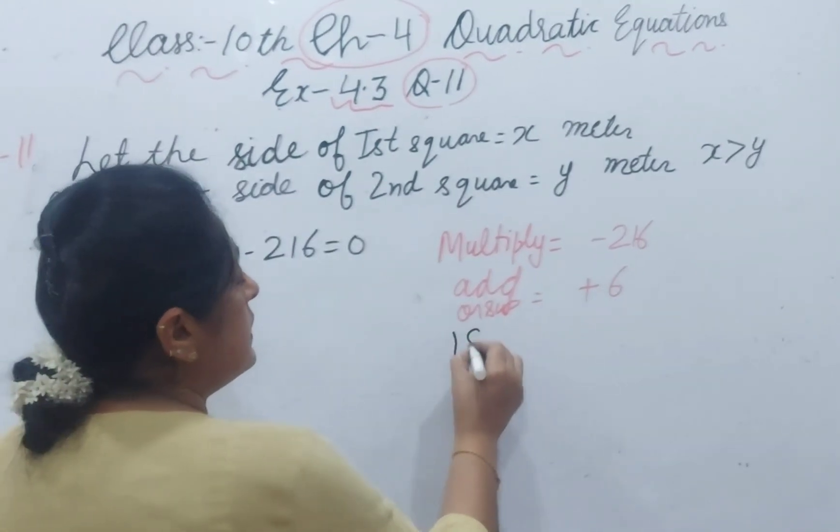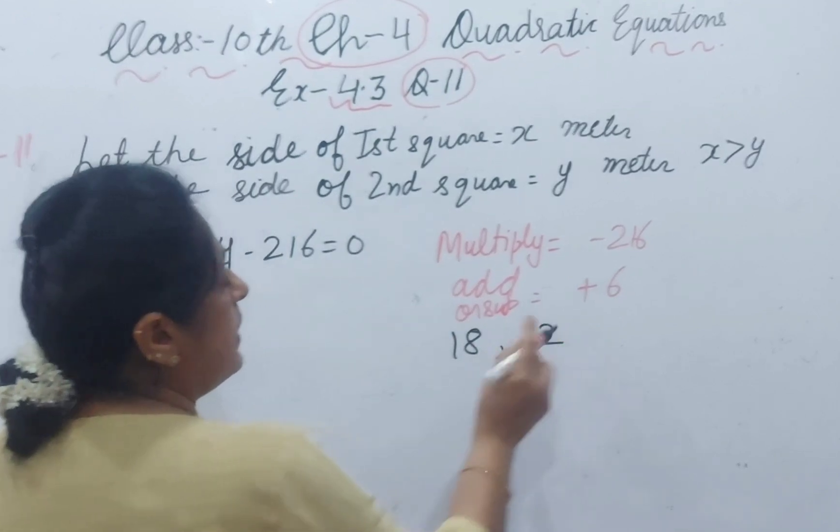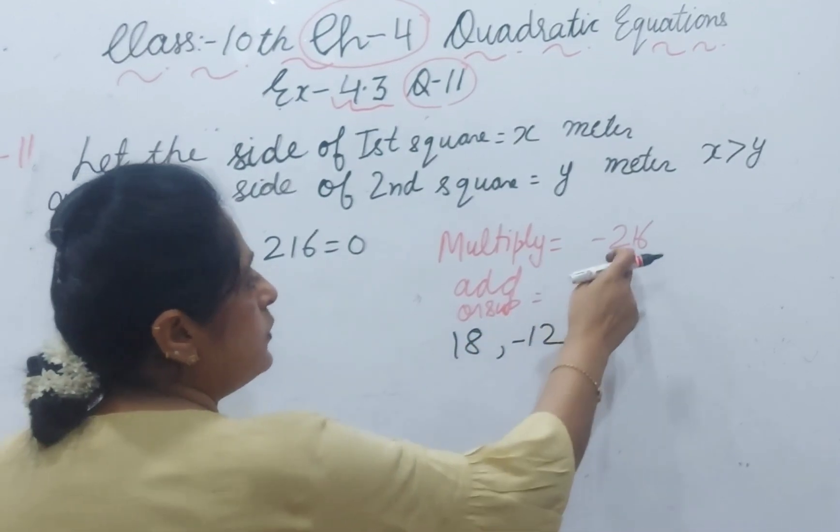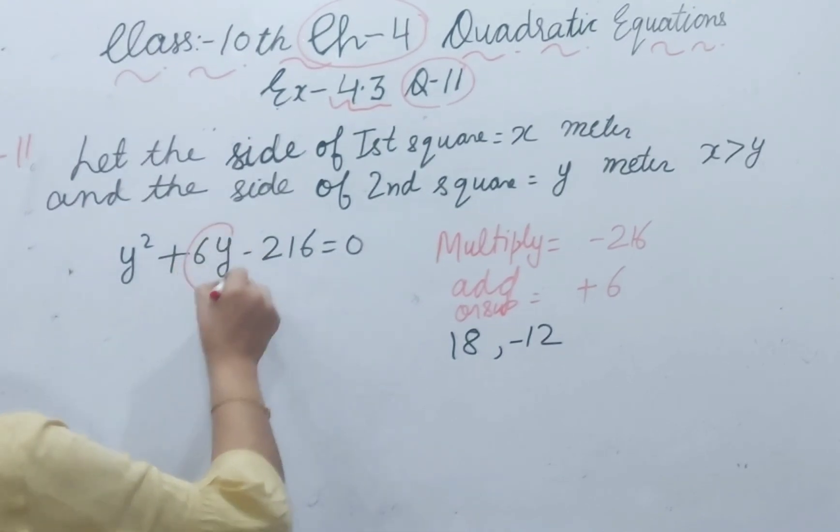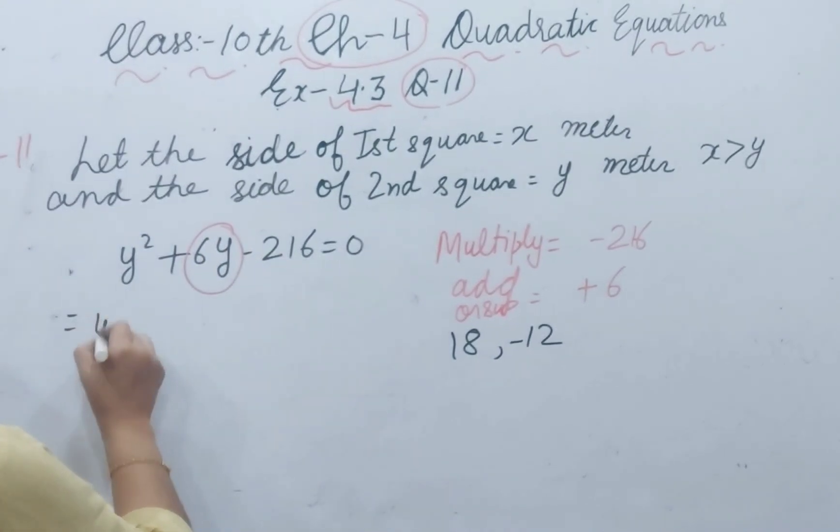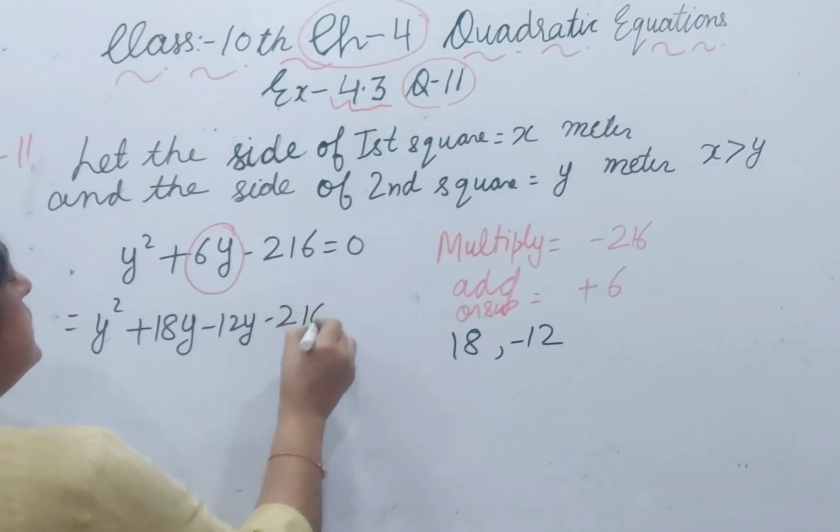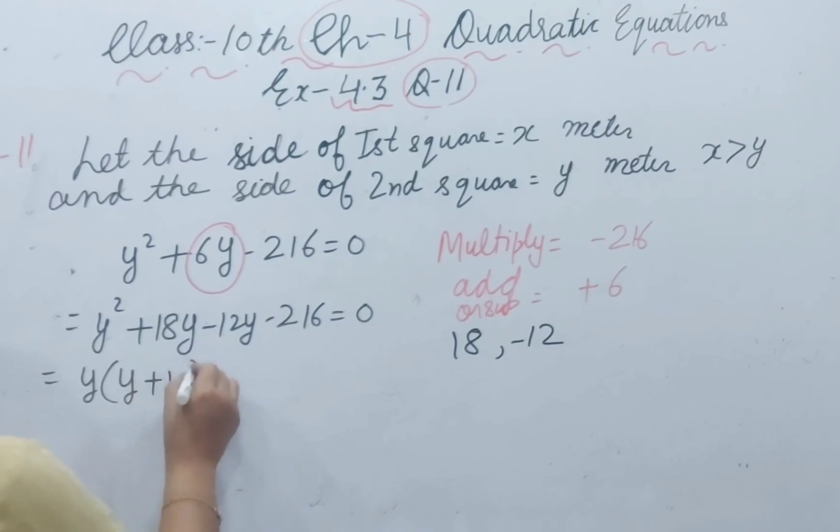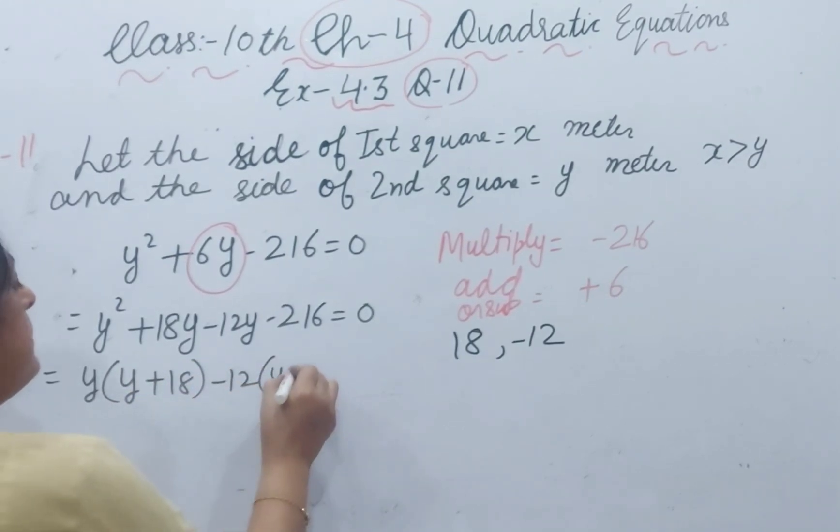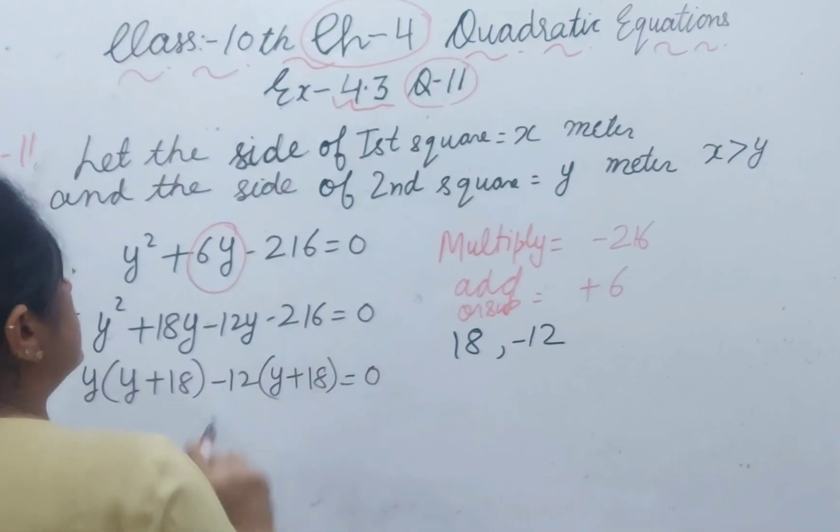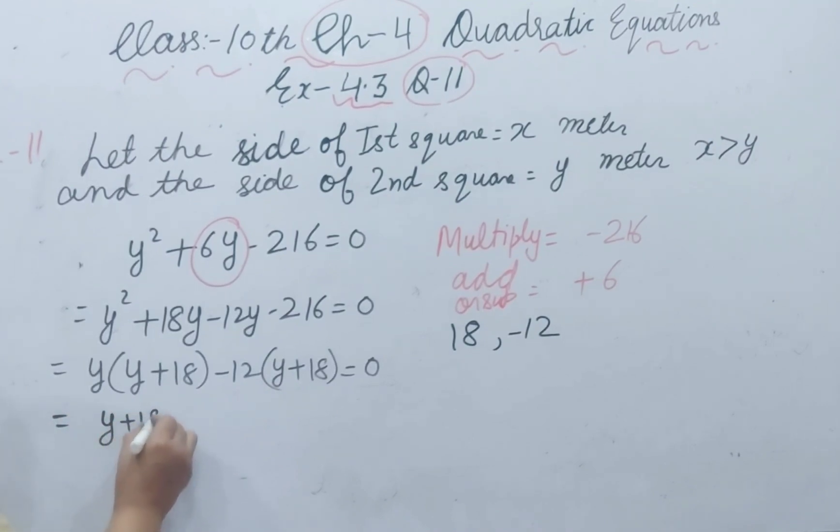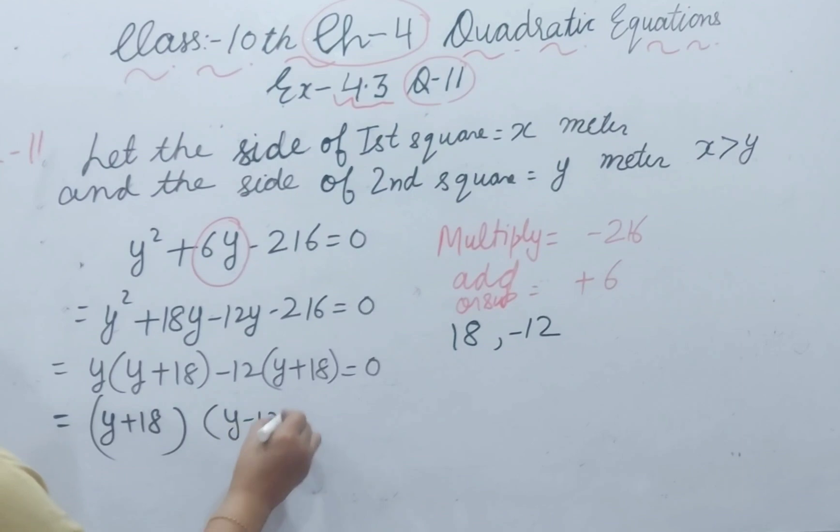I am choosing 18 plus and 12 minus. If you add, you will get plus 6. If you multiply 18 and minus 12, you will get minus 216. So split the middle term. Y square plus 18y minus 12y minus 216 equal to 0. Take y common: y plus 18, and minus 12, y plus 18 equal to 0. Take y plus 18 outside and y minus 12 left.